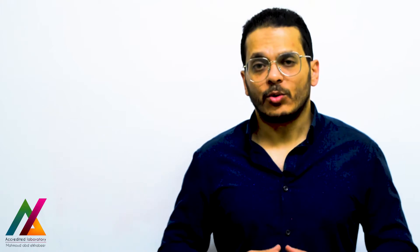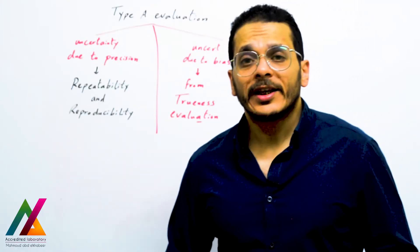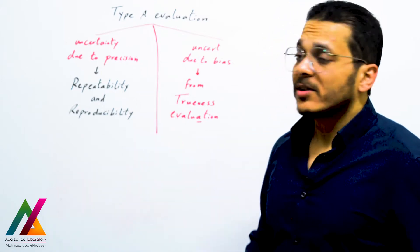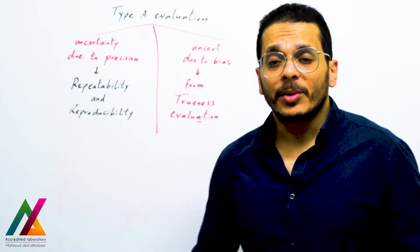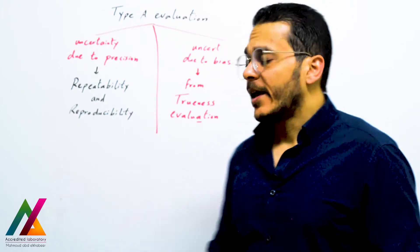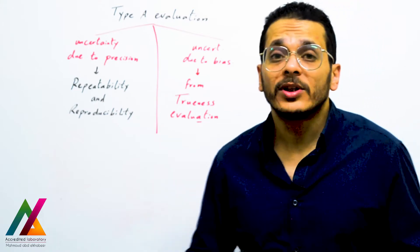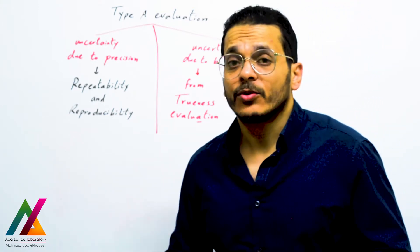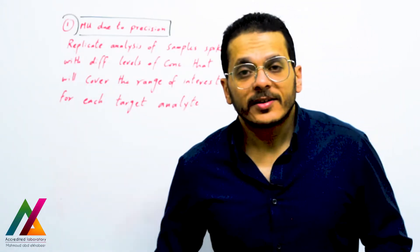According to the Eurachem guideline, you have two ways: Type A evaluation and Type B evaluation. From Type A evaluation you will get two values: measurement uncertainty due to precision, which comes from repeatability and reproducibility, and measurement uncertainty due to bias, which comes from trueness evaluation. Bias is the measure of trueness.